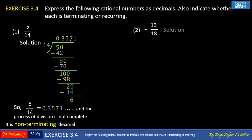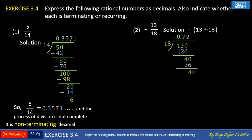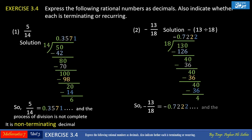Problem number 2: minus 13 upon 18. During the division process, set aside the minus sign and start the division. The decimal of rational number minus 13 upon 18 is -0.7222... The division process does not complete, and after the decimal point the digit 2 repeats, so it is a recurring decimal.